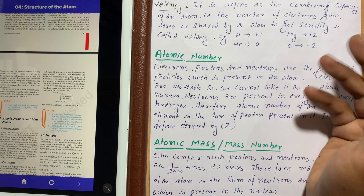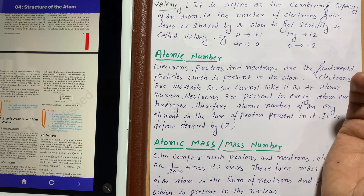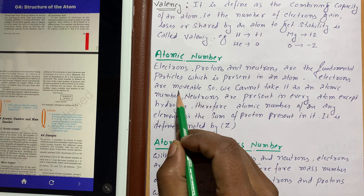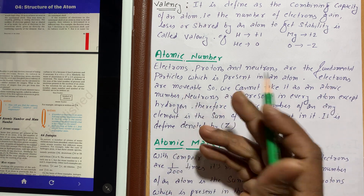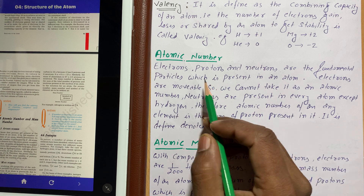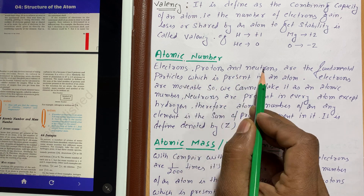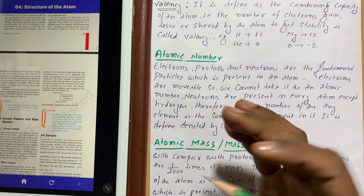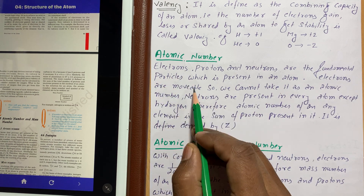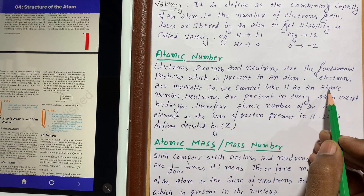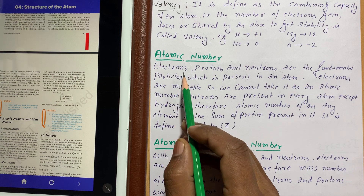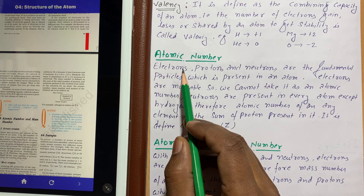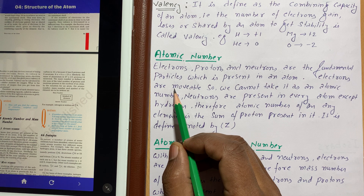Oxygen can accept 2 electrons, getting 2 extra electrons. So among the three particles, electrons can move — they are not fixed. They can be gained or lost. Therefore, we cannot define atomic number as the number of electrons, because the electron count can change.